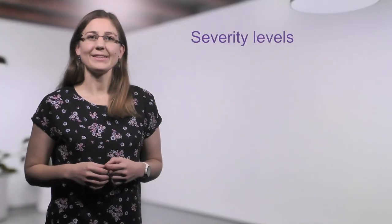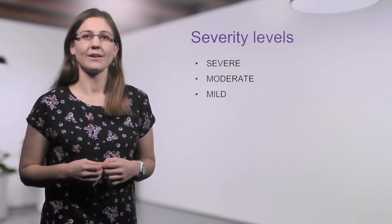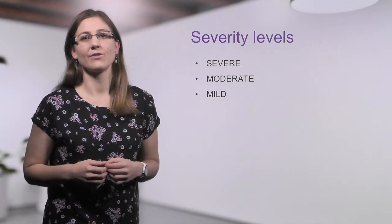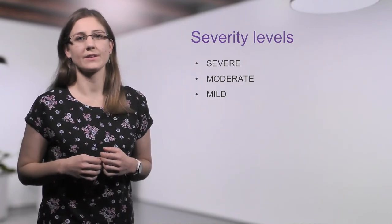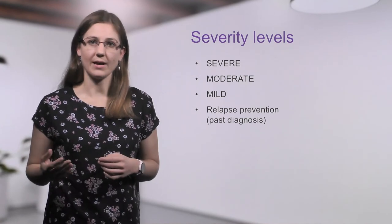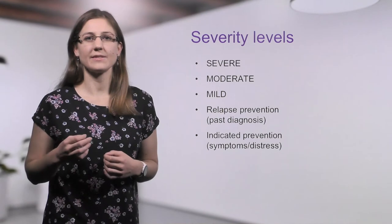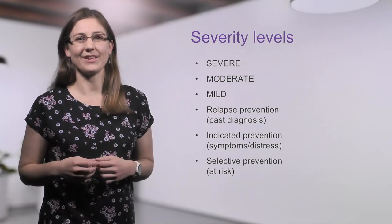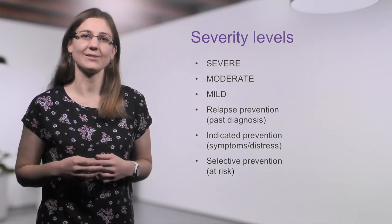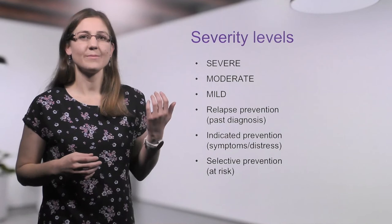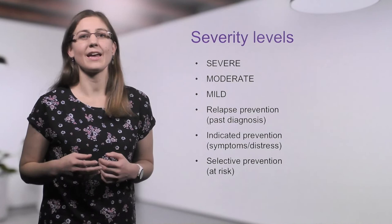For each age group, populations with a mental illness are split into three levels of severity and functioning. There are three additional levels for populations who need services but do not have a current mental illness diagnosis, including relapse prevention for people with a past diagnosis, indicated prevention for people experiencing symptoms or distress, and selective prevention for at-risk populations such as children living with a parent who has a severe mental illness. Estimated numbers of people in the latter three groups have been derived from population surveys and research studies.